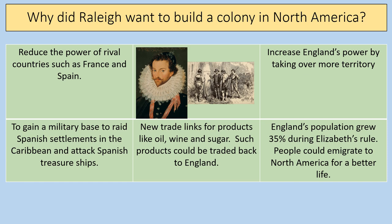Raleigh wanted to build a colony in North America partly to rival the power of France and Spain as Catholic countries — he was a strong Protestant who wanted to increase England's power and spread the Protestant religion around the world. He also wanted a military base to attack Spanish settlements in the Caribbean, new trade links, and given that England's population grew during Elizabeth's rule, he hoped that people could emigrate to North America for a better life.